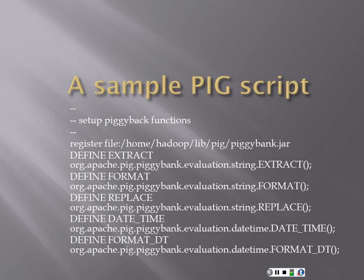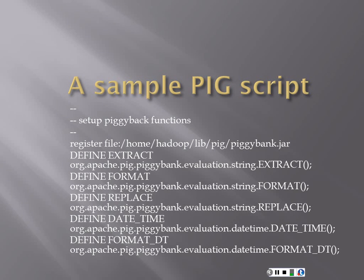Sample Pig script. The script in your classroom sets up various functions, which we'll walk through. First, we want to register things — there's a whole Java process behind this. We're going to evaluate strings: the evaluation string is about extracting the string, formatting it the specific way we want, replacing that string, and fixing datetime. Because datetime is always going to be different, we want to make sure the datetime stamps match up, so we pull it out and format it.